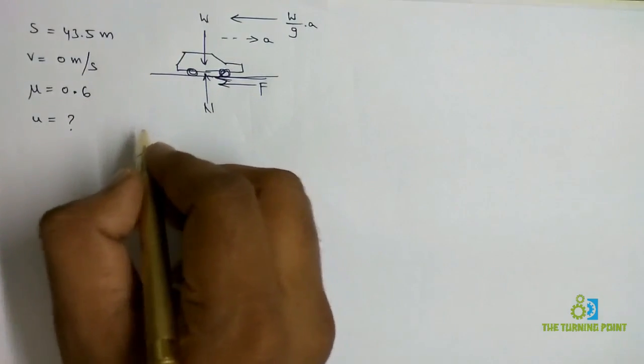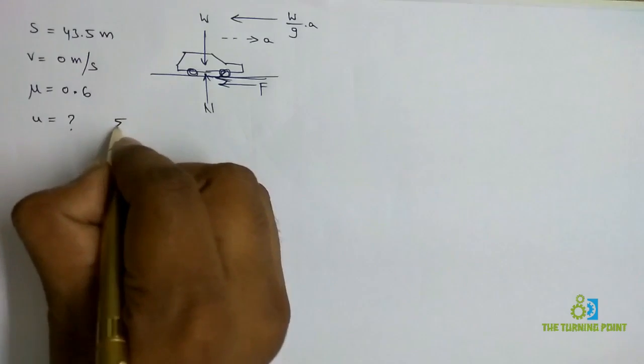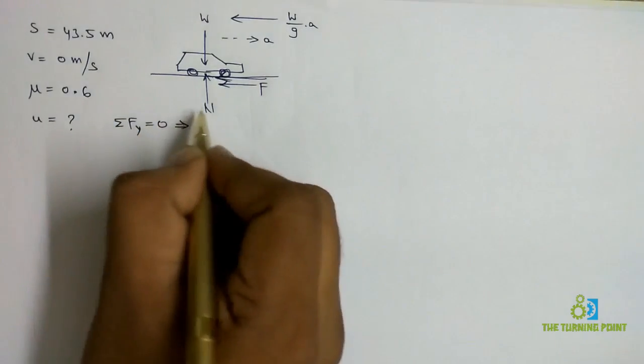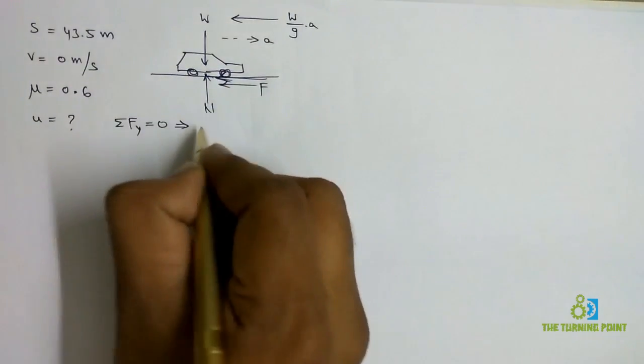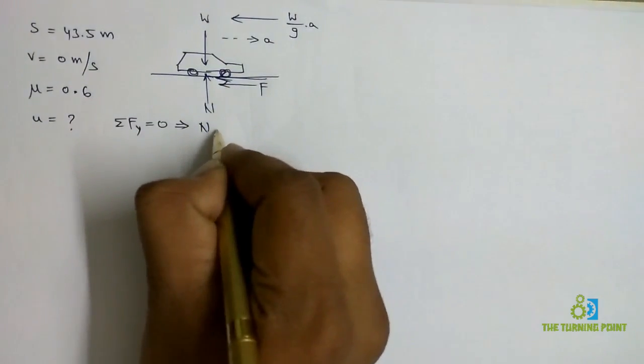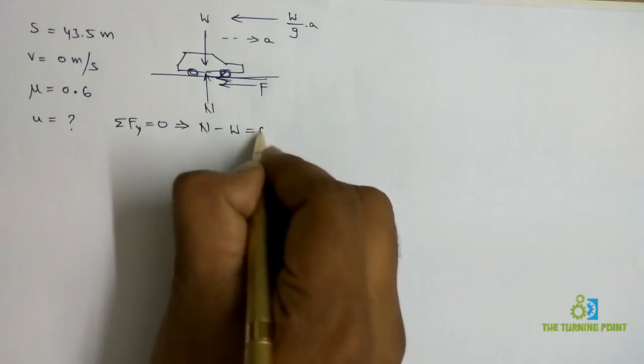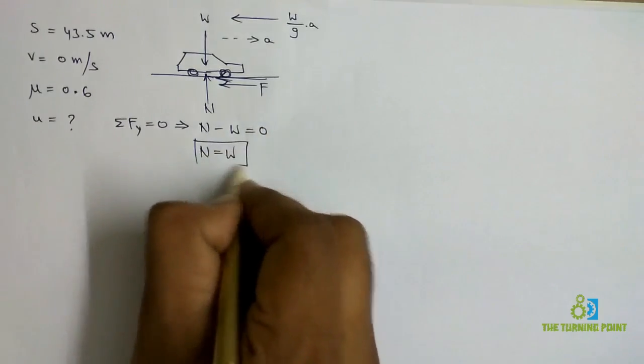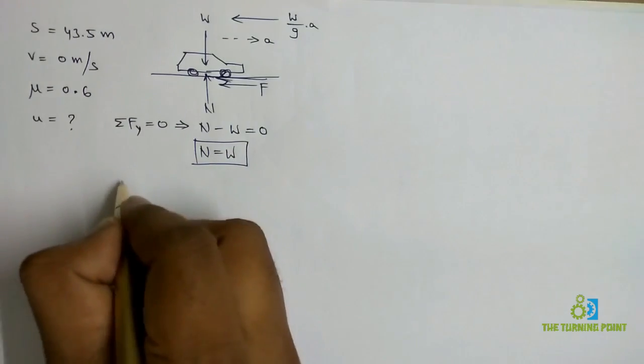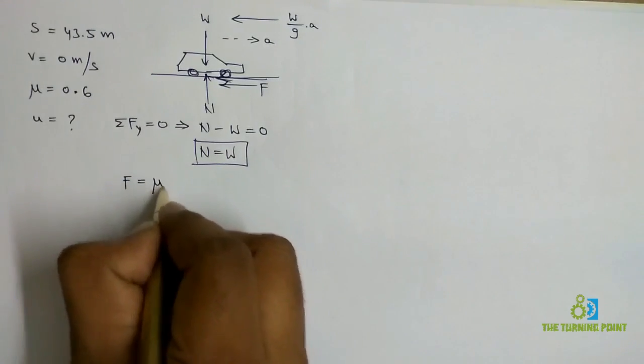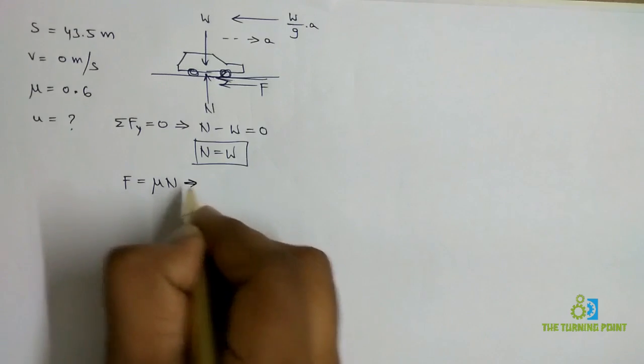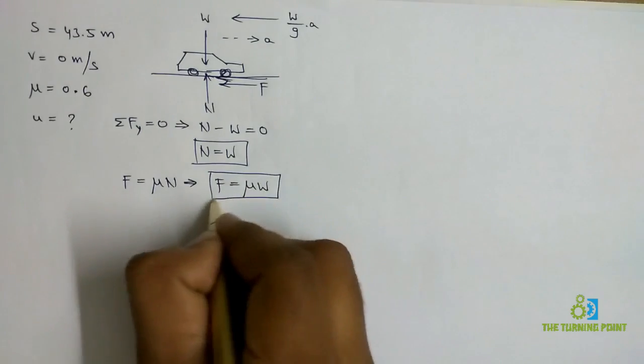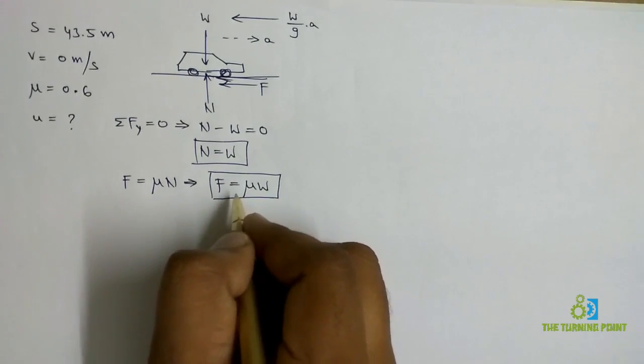If I consider ΣFy = 0, the forces along y direction are N and W, so N acting along positive y direction, W acting along negative y direction, which means N = W. If I know the value of N I can calculate frictional force from the relation F = μN, which is nothing but F = μW.